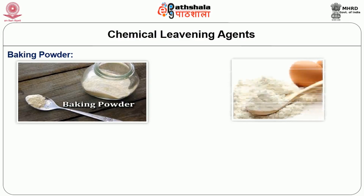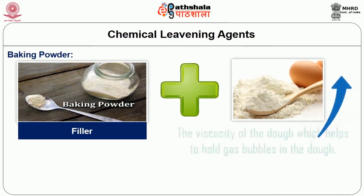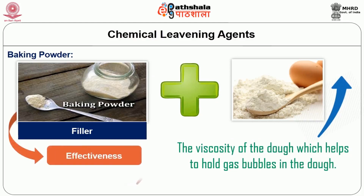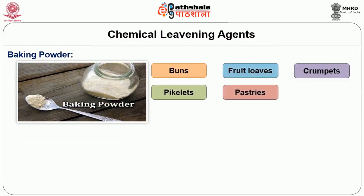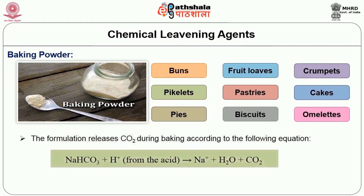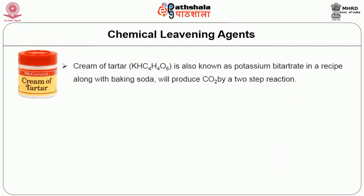Sometimes powdered and dried egg albumin is also added to baking powder as a filler. Egg albumin powder increases the viscosity of the dough, which helps to hold gas bubbles in the dough, hence increasing the effectiveness of baking powder. Baking powder is widely used in buns, fruit loaves, crumpets, pikelets, pastries, cakes, pies, biscuits, etc. When used in a formulation, baking powder releases carbon dioxide during baking according to the equation shown in the slide.